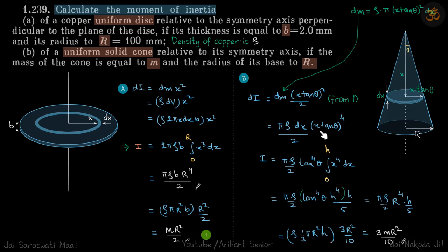We still have a term of θ. Assuming this is constant for the cone, we can take it out. We know tan θ can be written as R/h.